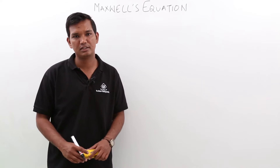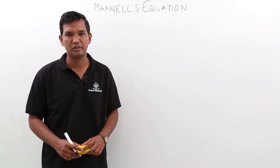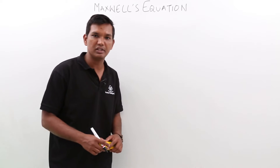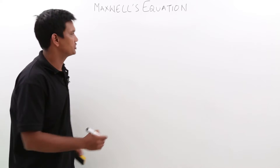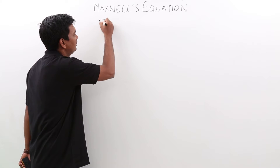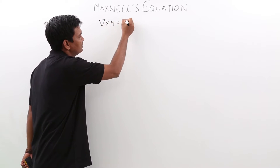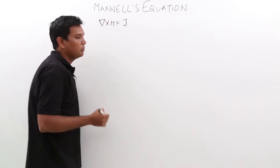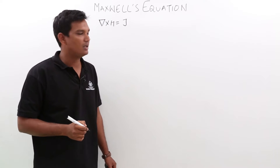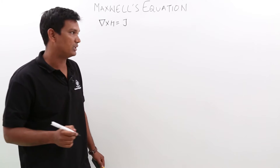In this class, we will discuss Maxwell's fourth equation. We have already seen Maxwell's fourth equation in the last lecture, which is del cross H equals J. But this equation is an incomplete equation. Let us try to understand why it is an incomplete equation.